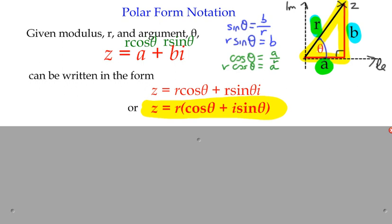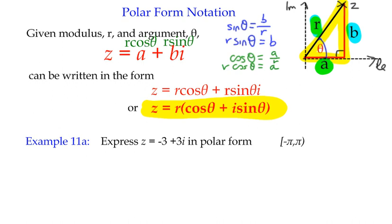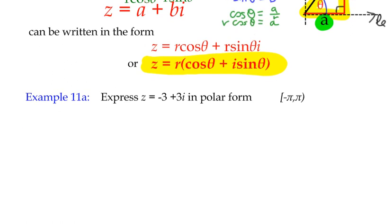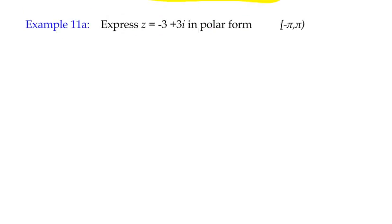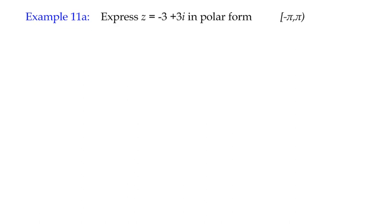A couple of examples. This is an extra one — if you're using the notebook, it's only example 11b that's there. Express z equals root 3 plus root 3 i in polar form. This notation means we want the argument to be between negative pi and pi, or negative 180 and 180 degrees, as discussed in the previous example.